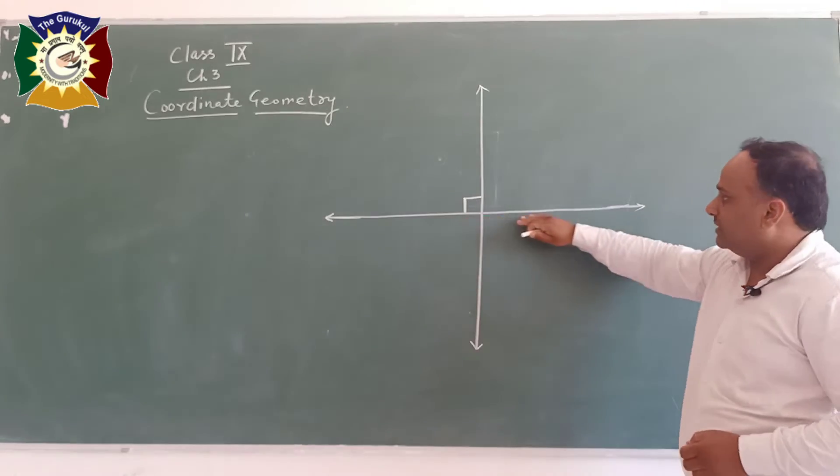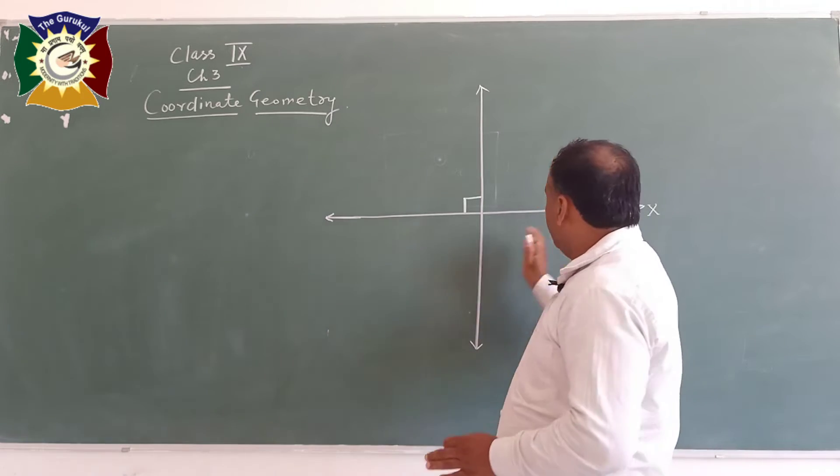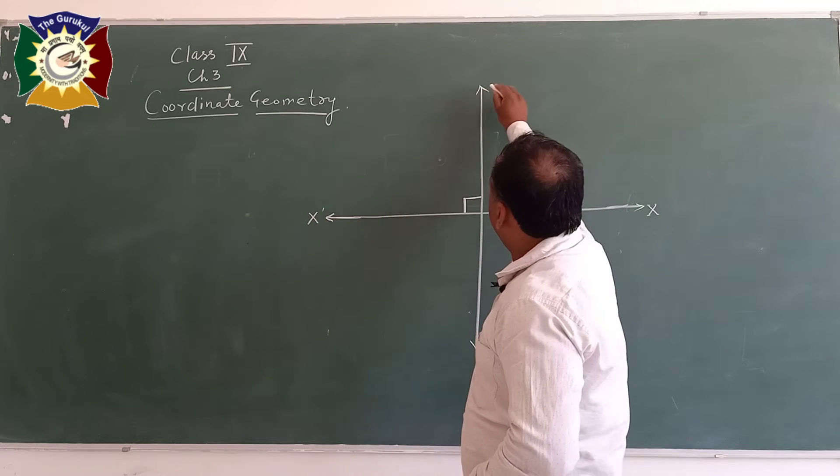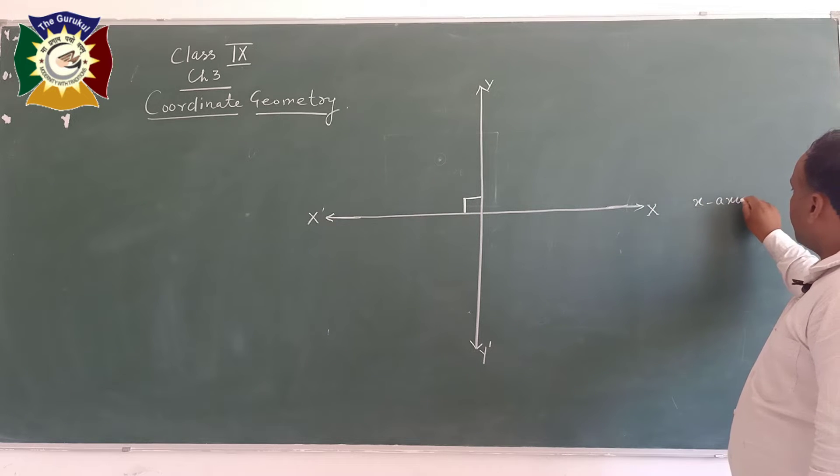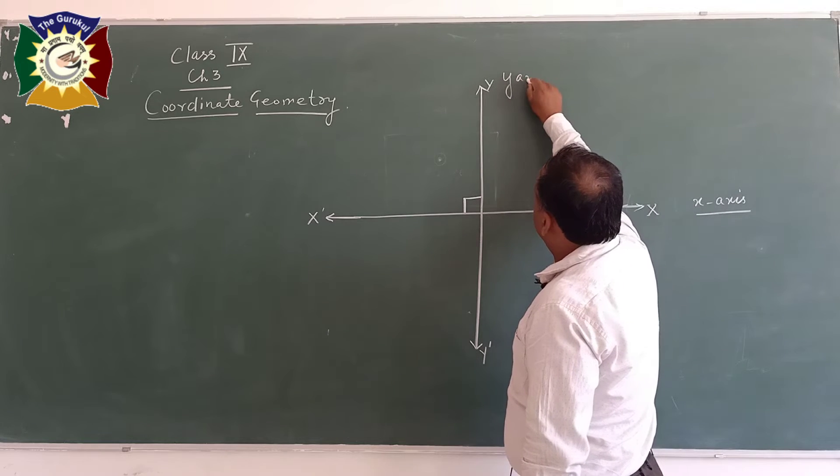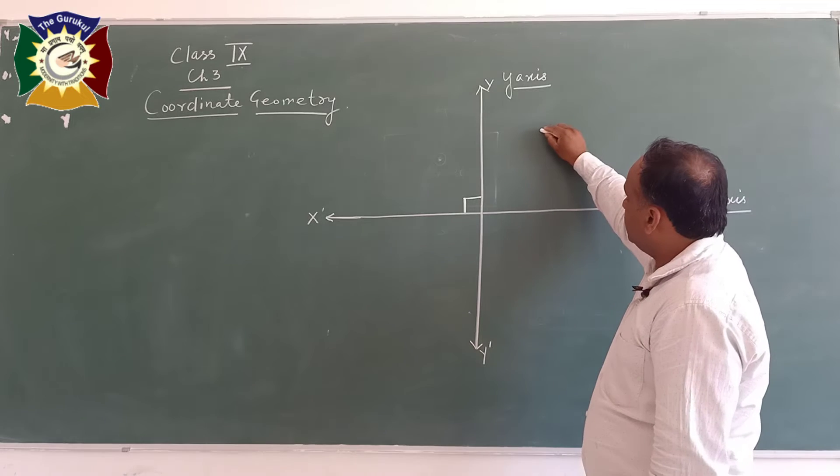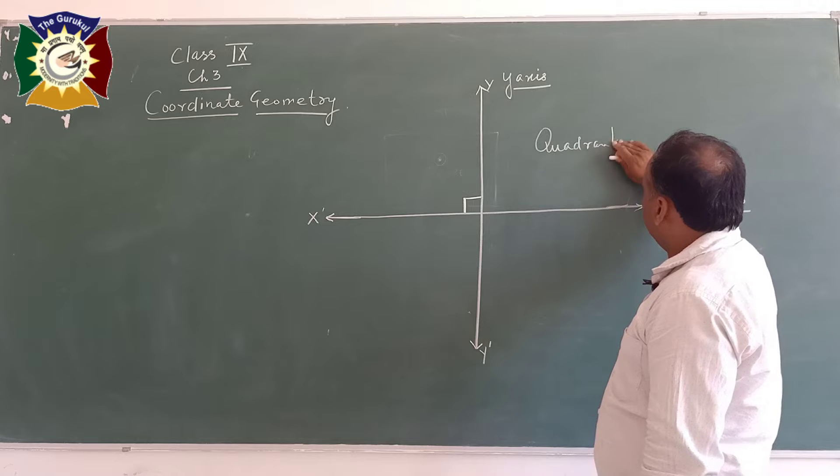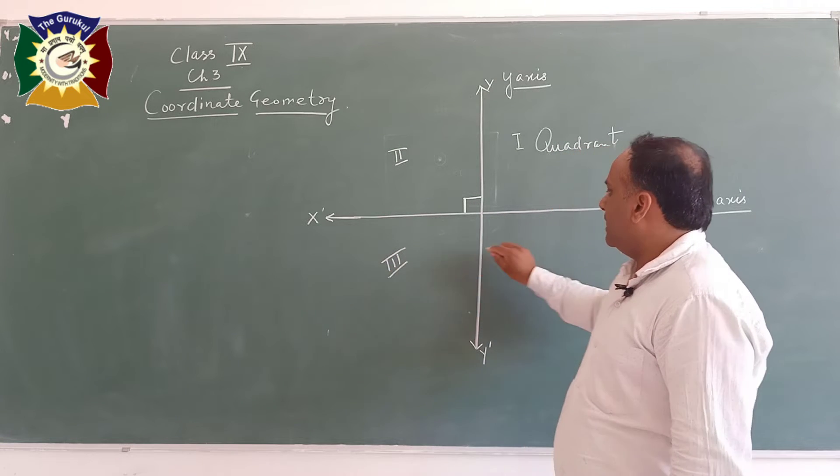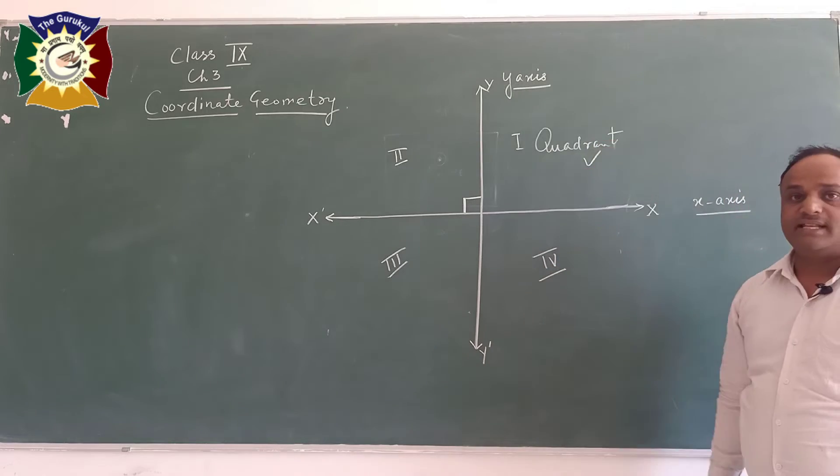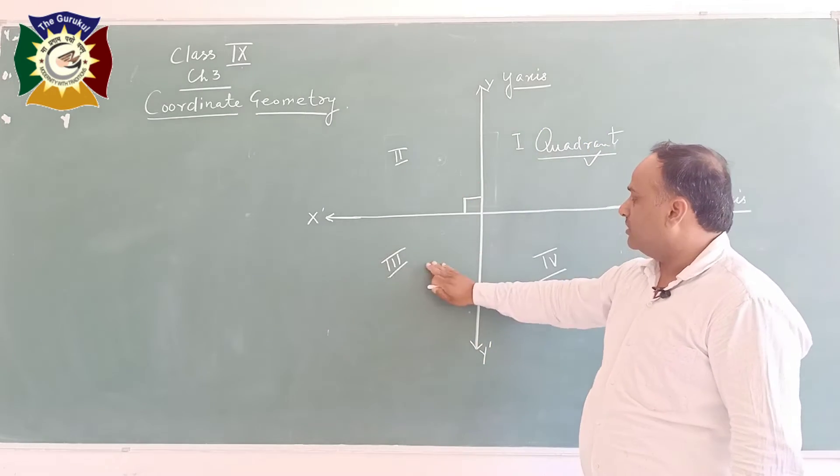He has given its name as x-axis. So we write capital X. Sometimes students write small x, but it's X-dash. And this is Y, Y-dash. So this is called x-axis and this is called y-axis. And you can see that four parts are there. These four parts are called quadrants. This is the first one, this is the second one, third quadrant, and this is the fourth quadrant.